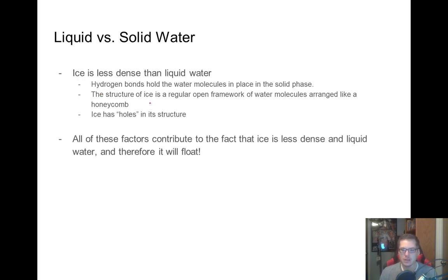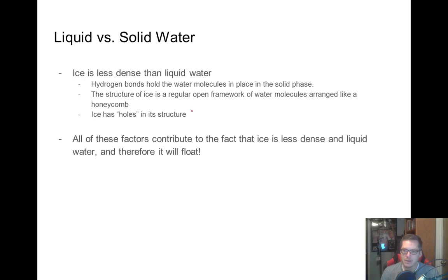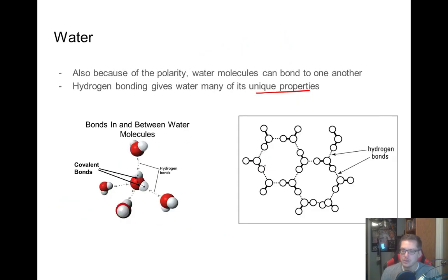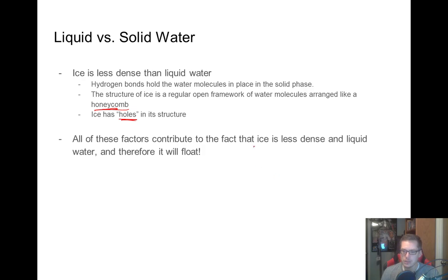Ice is less dense than liquid water. When you go from liquid to solid, it's an exothermic process — energy leaves the liquid, and what's left are water molecules with less kinetic energy, so they arrange in a lower energy state. Those intermolecular forces have a lot more strength holding the molecules together, so those hydrogen bonds take over and dictate the shape. Because of this, the molecules become much more open — they arrange themselves in a honeycomb, and ice has holes in its structure. This is crystalline water: we get this honeycomb shape with six-sided figures where these water molecules have holes between them, whereas in liquid water these molecules would be much closer to one another.